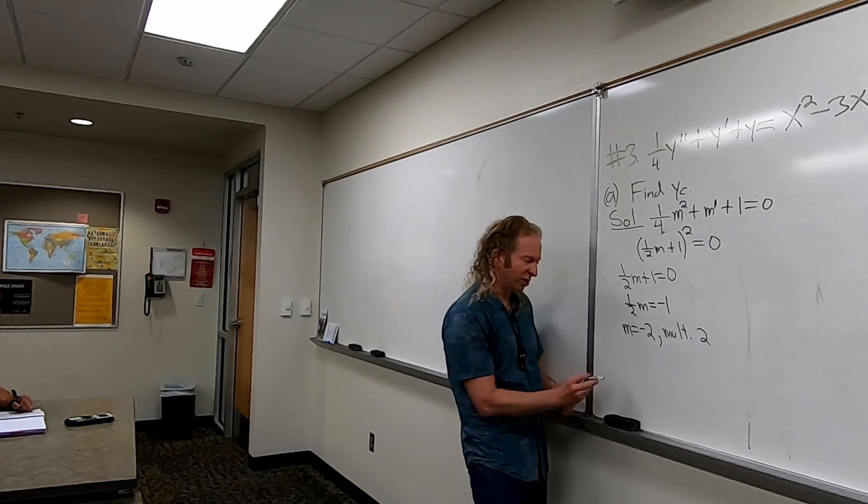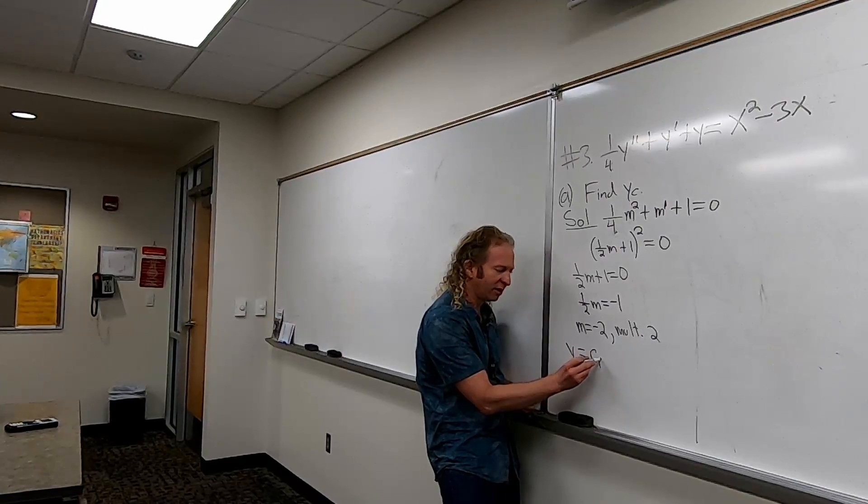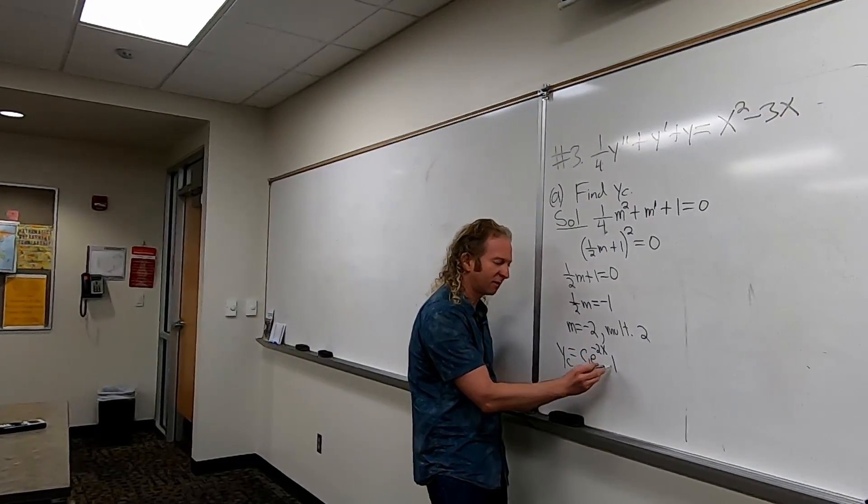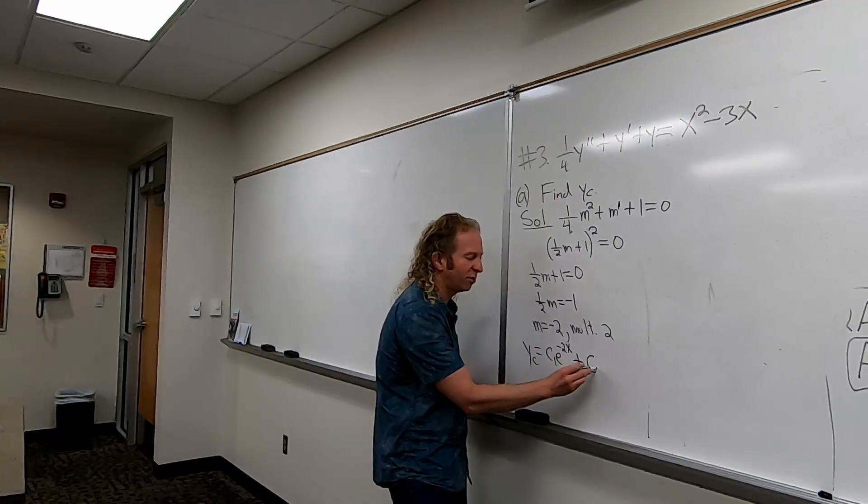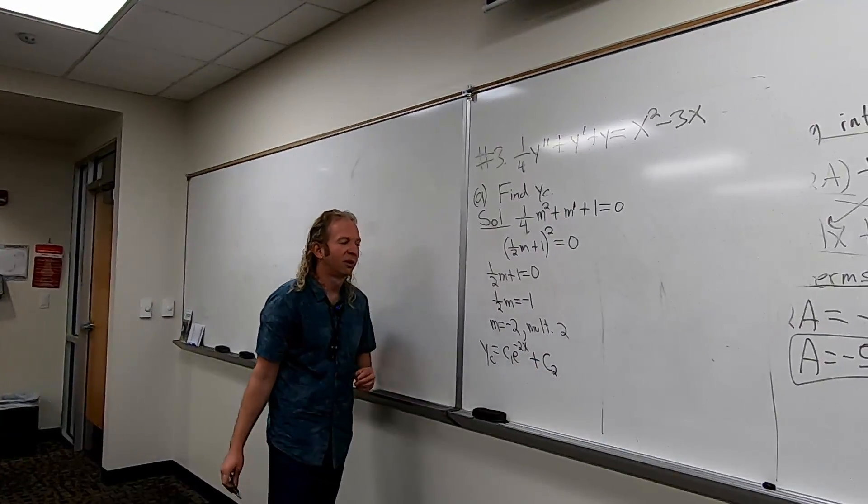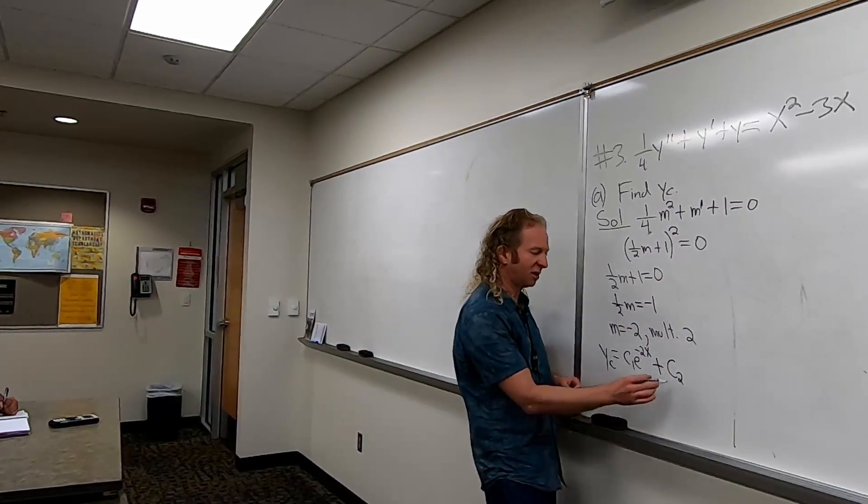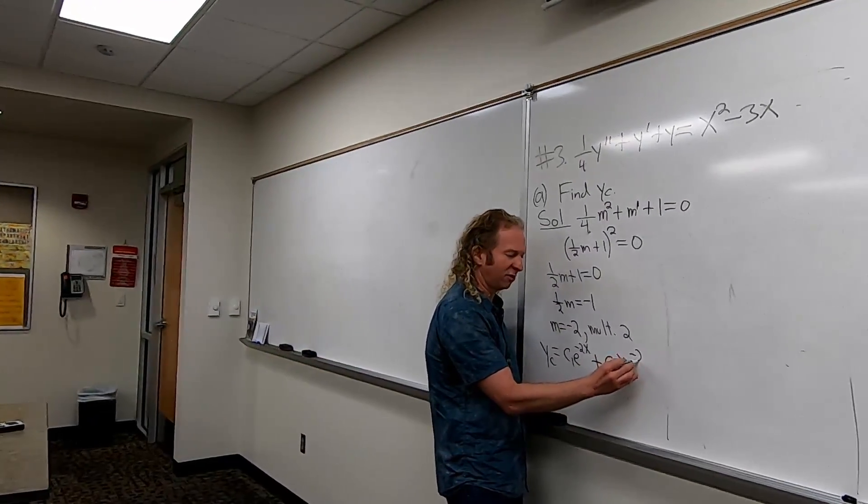Now we can write the solution down. So Y sub C. Let's just C1, E to the negative 2X plus C2. What goes here? X. X. Yeah, because of the repetition. X, X, E to the negative 2X.